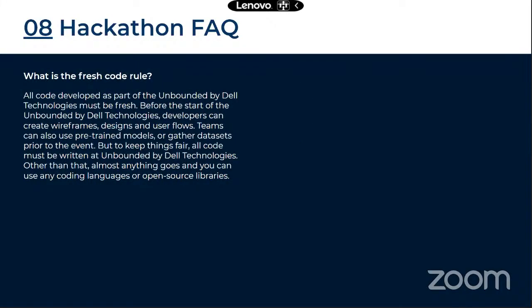An important rule for hackathon veterans: the fresh code rule applies here. Developers may create wireframes, designs, and user flows before the start, but all code must be written during Unbounded by Dell Technologies — meaning after coding officially opens. This keeps things fair for everyone.